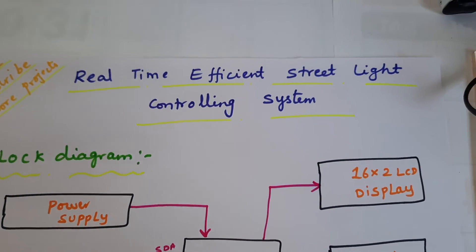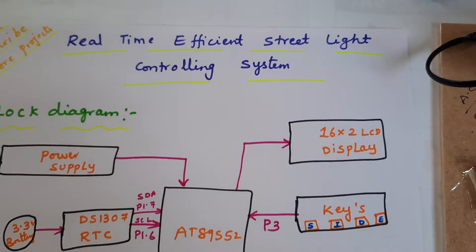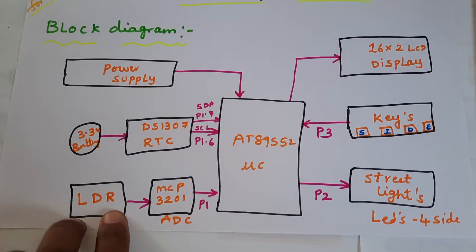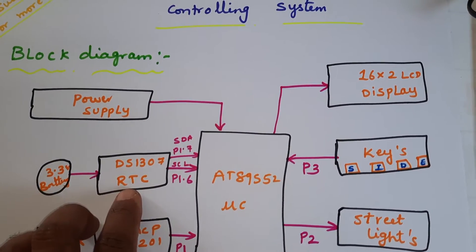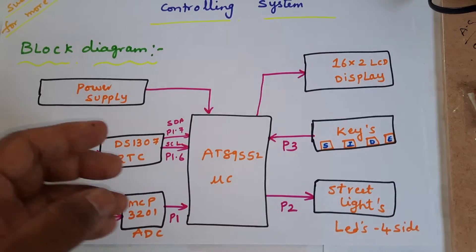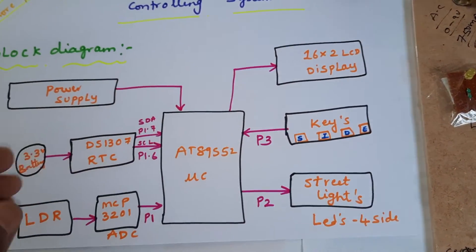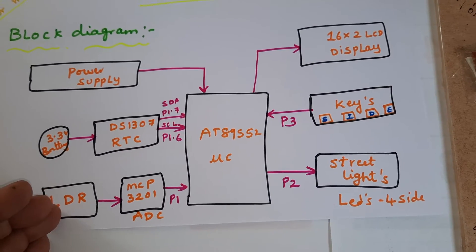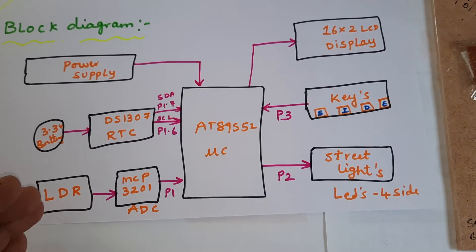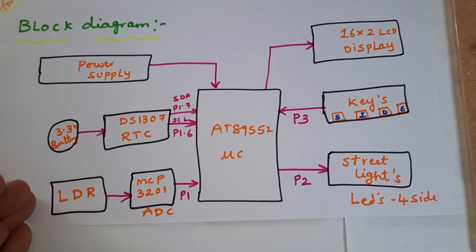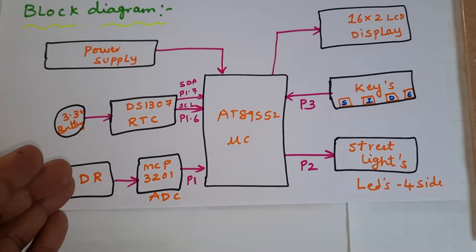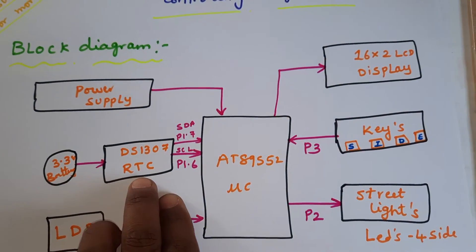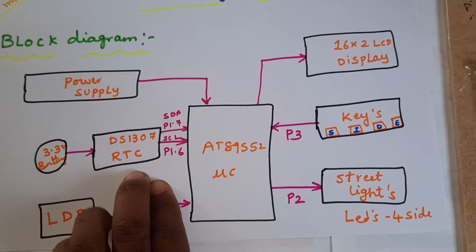The project title is 'Real-Time Efficient Street Light Controlling' using two methods: one is LDR-based and one is DS1307 RTC-based. We are controlling the street light using RTC as well as LDR. Season-based street light controlling — through summer, rainy, and winter seasons — the LDR will detect sunlight, and according to the sunlight level, the street light should turn on and off.